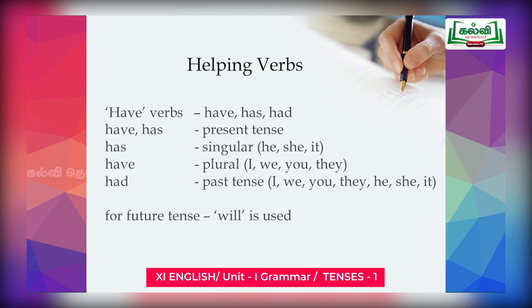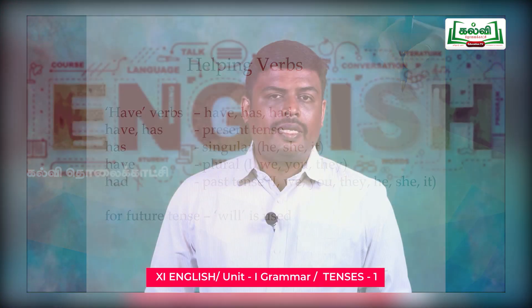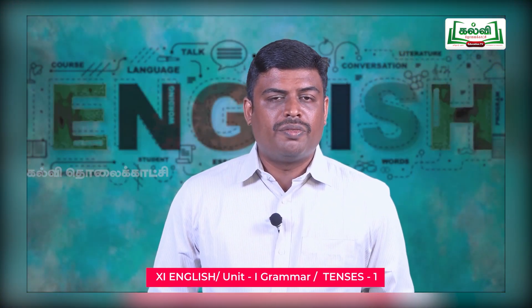Finally, we take have verbs: have, has, had. The first two — have and has — are present tense, and 'had' is past tense. 'Has' is used for singular subject and 'have' is used for plural subject. Then 'had' is used for both singular and plural — there is no difference between singular and plural subjects.